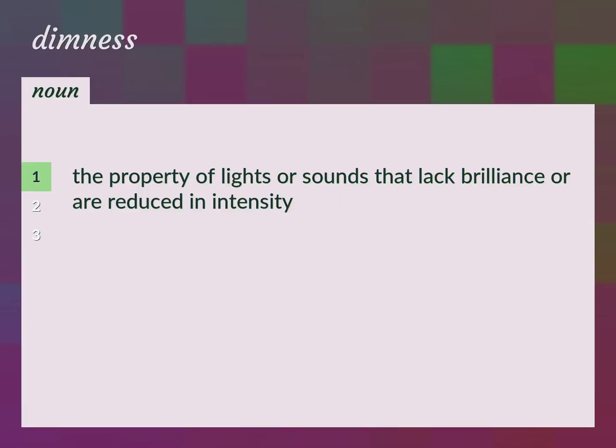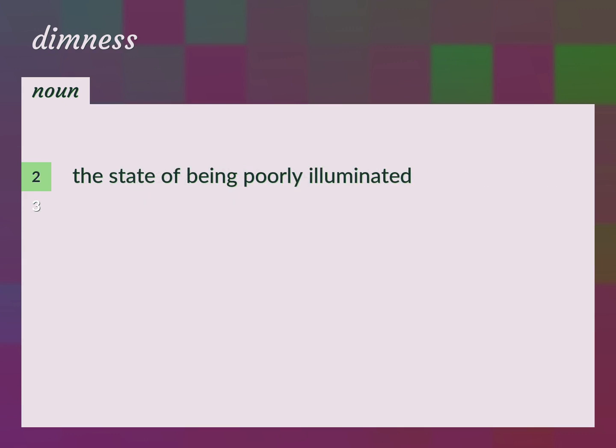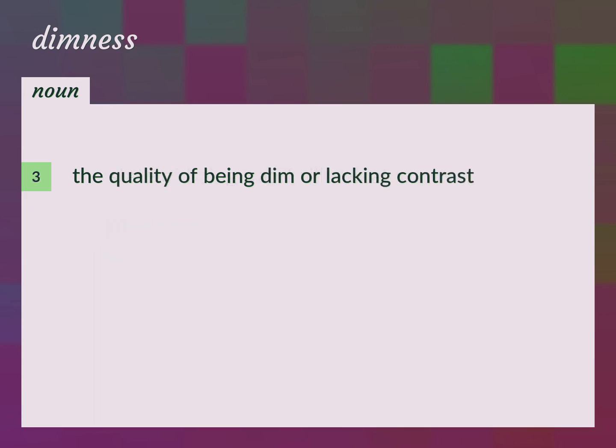The property of lights or sounds that lack brilliance or are reduced in intensity: Subduedness. The state of being poorly illuminated: Duskiness. The quality of being dim or lacking contrast: Faintness.